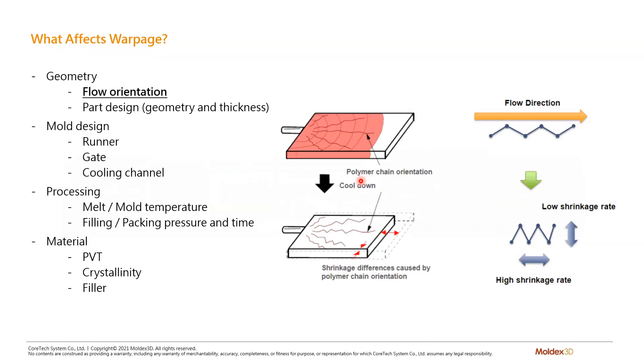This page shows what affects warpage. It can be roughly divided into four major factors, including the geometry, the mold design, process condition, and the material. You may find your solution to solve the warpage problem in this list.